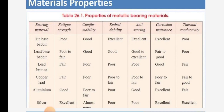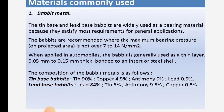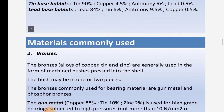The commonly used material is babbit. Tin-based and lead-based babbits are widely used as bearing materials because they satisfy most requirements for general applications. Babbits are recommended where the maximum bearing pressure on projected area is not over 7 to 14 N/mm². In automobiles, babbit is generally used as a thin layer, 0.05 mm to 0.15 mm thick, bonded through an insert or steel shell. Tin-based babbit composition: tin 90%, copper 4.5%, antimony 5%, lead 0.5%. Lead-based babbit: lead 84%, tin 6%, antimony 9.5%, copper 0.5%.